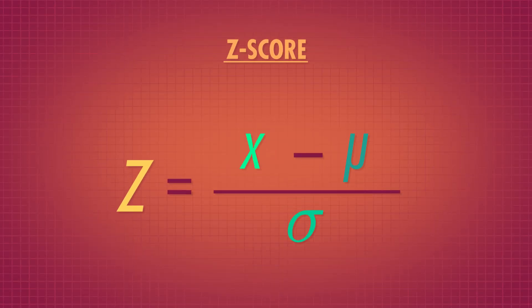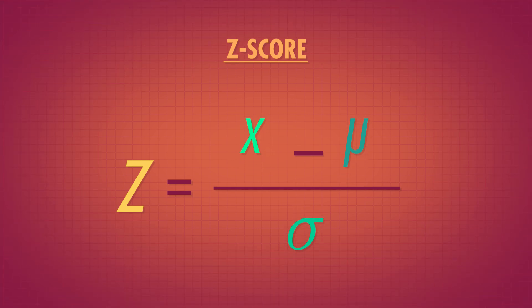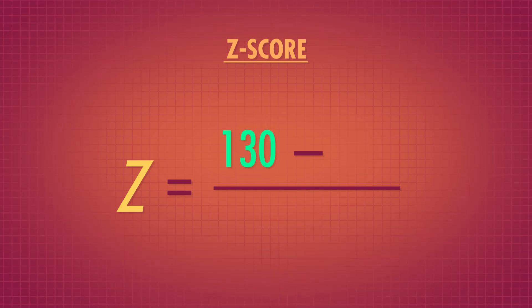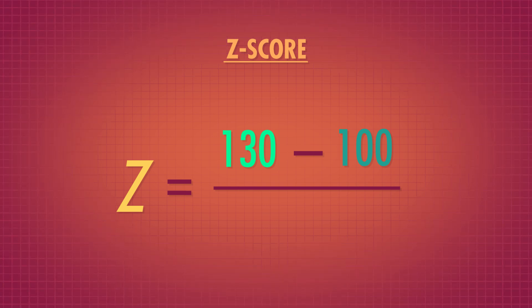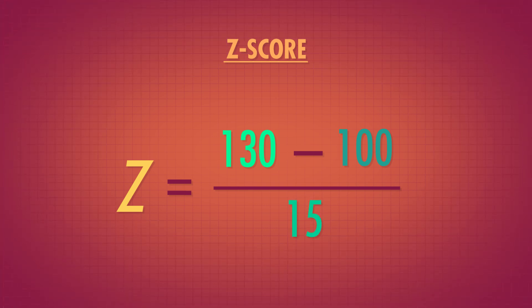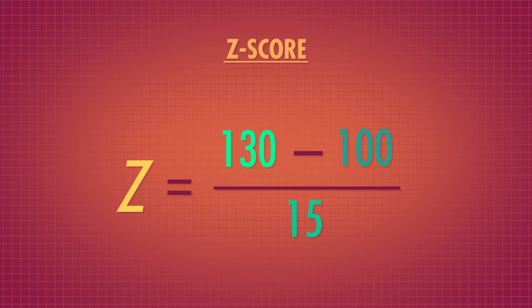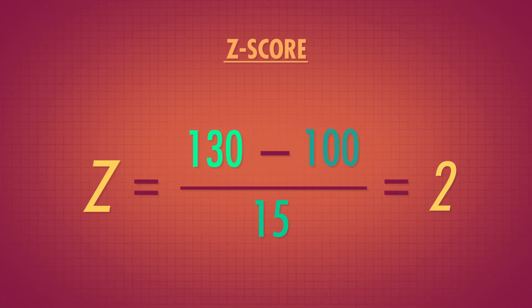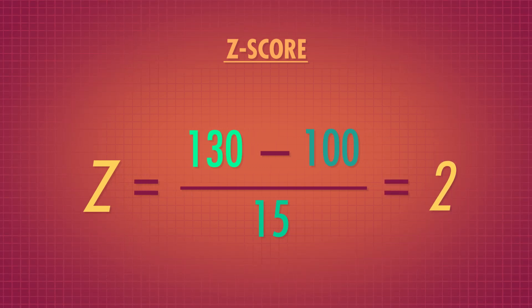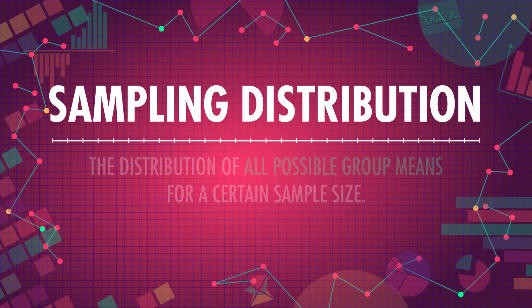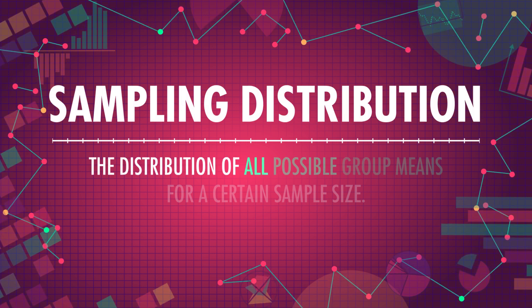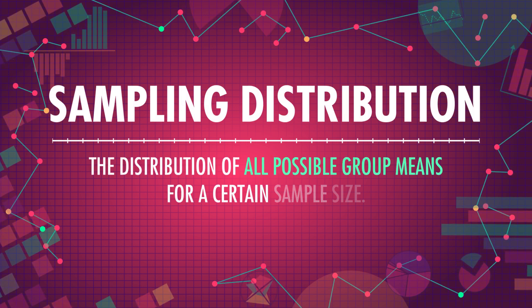A z-score is a test statistic. Let's look at a simple example. Say your IQ is 130 — you're so smart — and the population mean is 100. On average, we expect someone to be about 15 points from the mean. So the difference we observed, 30, is twice the amount we'd expect to see on average. Your z-score would be 2. And you can z-score any normal distribution, like a population distribution, but also a sampling distribution, which is the distribution of all possible group means for a certain sample size.